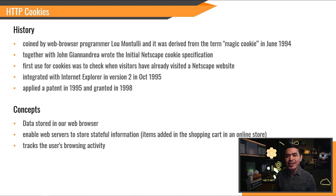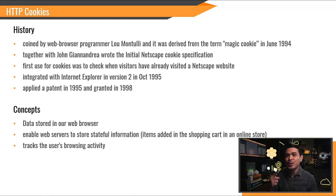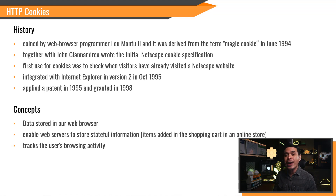HTTP cookies history: first invented by a web programmer named Lou Montuli in June 1994. Together with his colleague John Gianandria, they wrote the initial Netscape cookie specification. Its first use was to check when visitors had already visited the Netscape website — so before, it was only for Netscape. Then it was integrated with Internet Explorer in October 1995 and granted a patent in 1998.